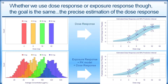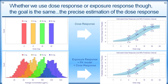Whether we use dose response or exposure response, the goal is the same: precise estimation of the dose response. The design will differ. With doses of 4, 8, 16 and 32, combining data within a dose-response model gives us the estimated dose response with uncertainty as 90% prediction intervals. With exposure response, the goal is the same final graph, but we get there differently - each dose level produces a distribution of average concentrations, and we pick doses so that the combined distribution teaches us most about the shape of the curve.